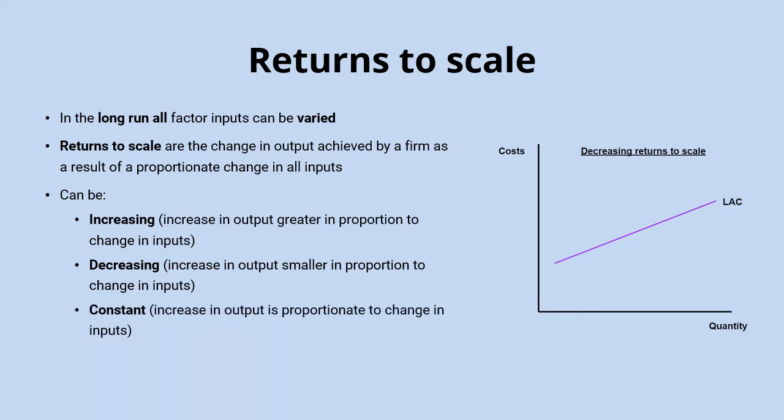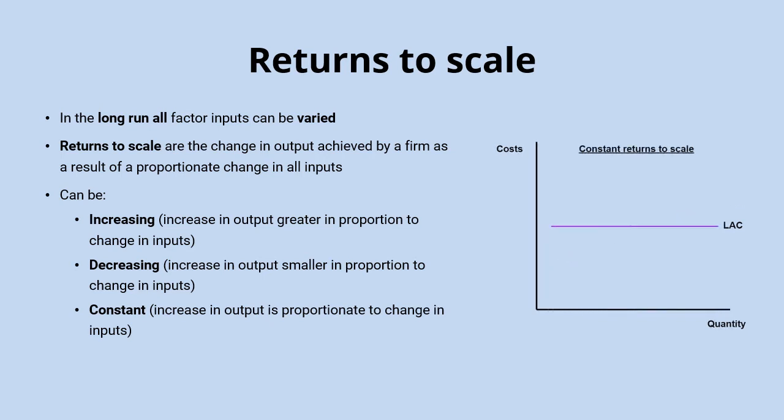Or a firm might experience constant returns to scale, where an increase in output is exactly proportionate to that change in inputs. There you would have a horizontal long run average cost curve, because the cost per unit remains unchanged as the quantity of output increases.